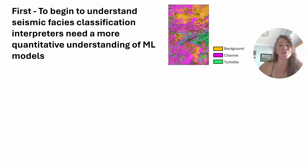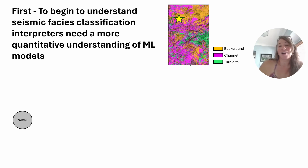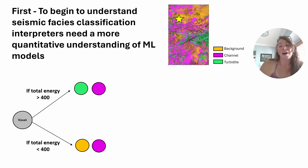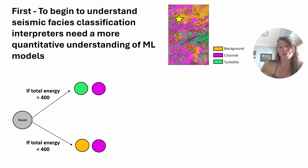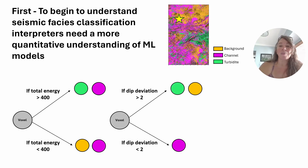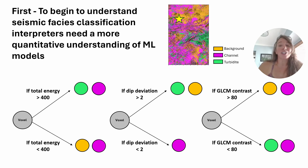If you're doing machine learning, the first thing you want to do is get a more quantitative understanding of the model. We're now looking at that time slice output from my random forest classification. I've got three different classes: background, channel, and turbidite. If we look at this voxel — where that yellow star is — what we'd want to know mathematically is, okay, is the algorithm seeing that the total energy is more than 400? In that case, it would be classified as a turbidite or a channel. If total energy is less than 400, perhaps that's background or channel. We're trying to see the math behind the decisions, kind of like a flow chart. For example, looking at dip deviation — if it has a lower dip deviation, it's more likely to be a channel. We could look at GLCM contrast, so for any seismic attribute we put in, we can start to see this decision matrix.